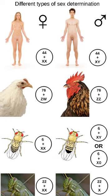Gradual sex reversal in developed mice can also occur when the gene FOXL2 is removed from females. Even though the gene DMRT1 is used by birds as their sex locus, species that have XY chromosomes also rely upon DMRT1, contained on chromosome 9, for sexual differentiation at some point in their formation.